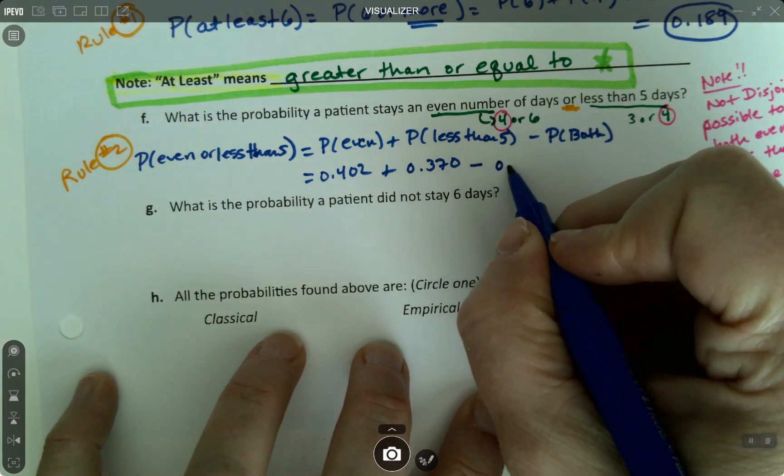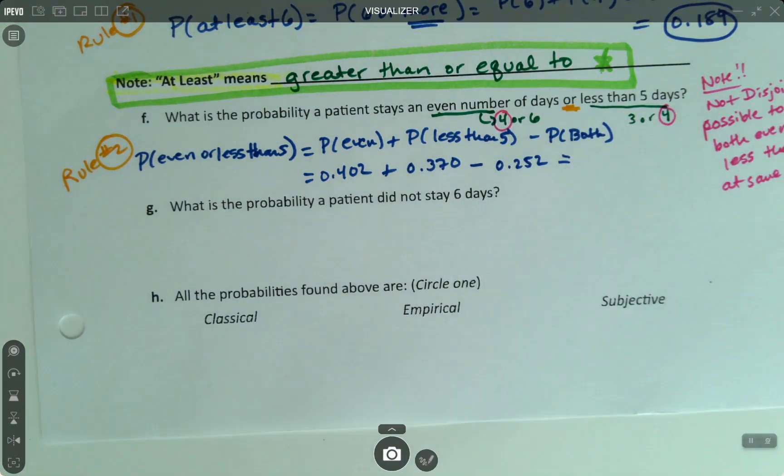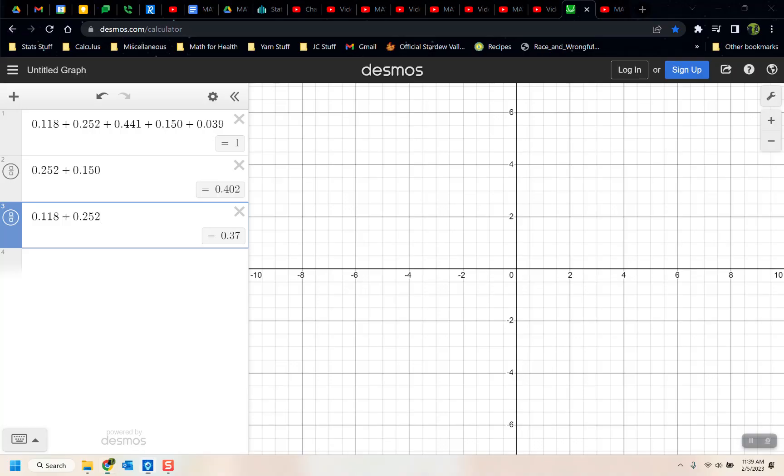And then I want to take away the probability of both. Well, both is the four. So I'm going to take away zero point two, five, two. Because zero point two, five, two was part of the point four, two. And it's part of the three, seven. Zero point two, five, two is in both of them. So that's not fair. So you take zero point four, zero, two plus zero point three, seven. And you take away zero point two, five, two, and you get zero point five, two, oh.